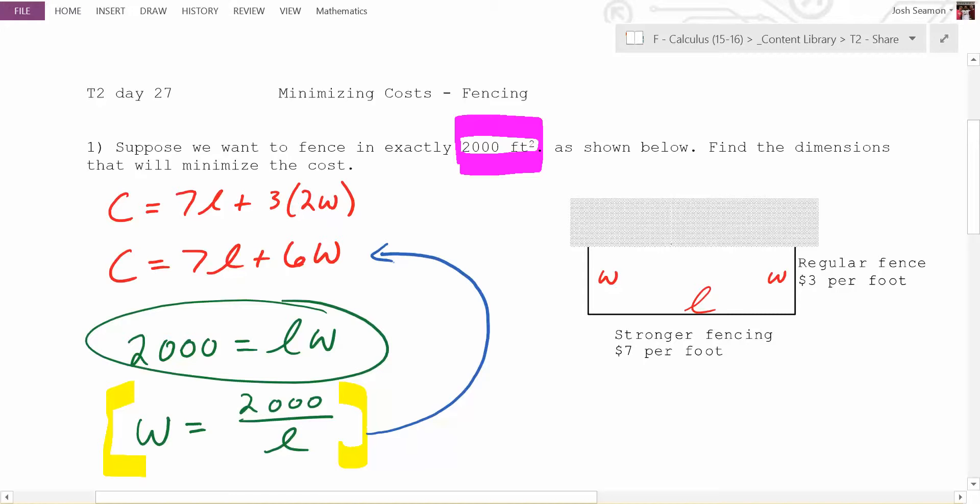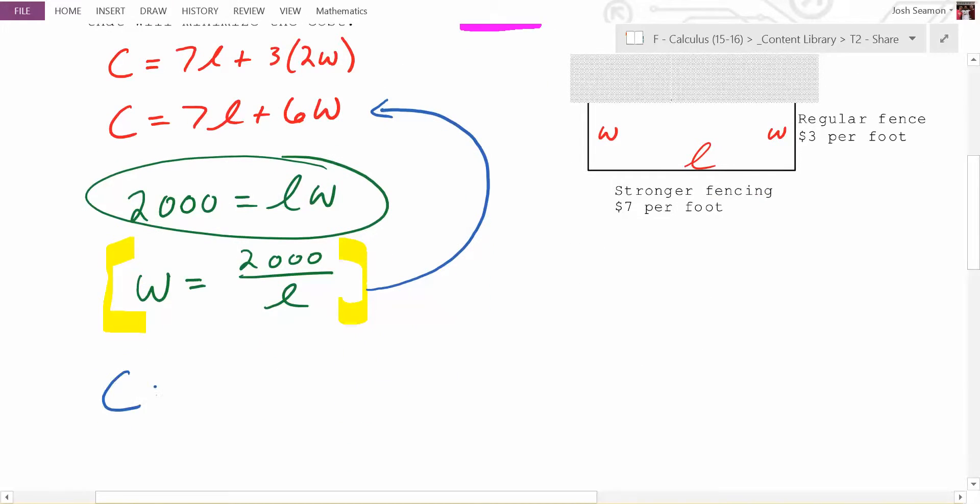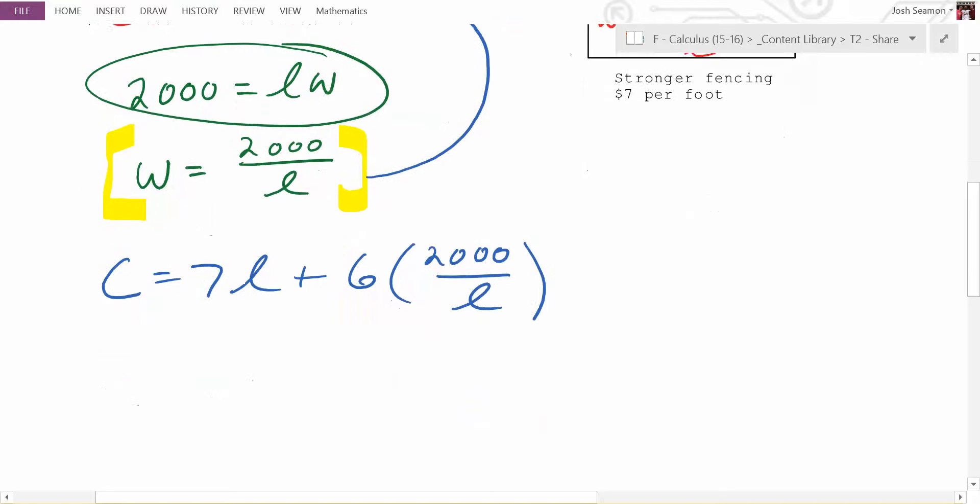Into the equation right there. Because what was the problem with that equation? Two variables. So now how many variables do we have? We have 7L plus 6 times what? Okay, you can sit down now, everybody. There's our cost equation.